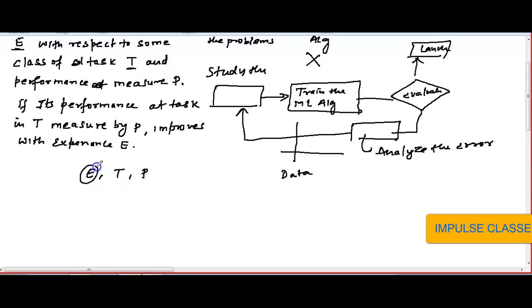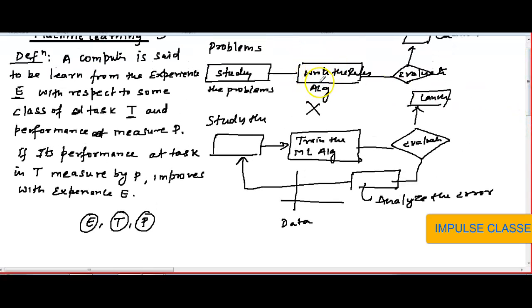So we have three parameters: E is experience, T is the task, and P is performance. We use some experience and some tasks, and performance keeps increasing for the particular task by learning from the experience — then we can say that that machine is learning. In a traditional program, the machine is not learning. Whatever procedure you have written for ascending order, merge sort, or quick sort, it just keeps evaluating the values and getting the result.